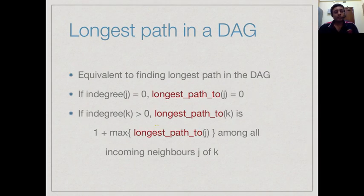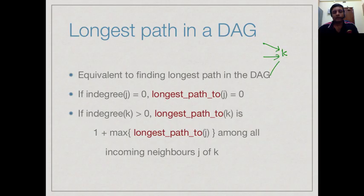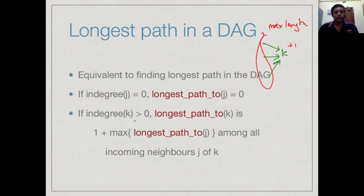We can set up this problem as follows. For any vertex with in-degree 0, the longest path to that vertex is 0 because we can do it immediately. On the other hand, if a vertex k has in-degree greater than 0, it has some incoming edges and we must wait for all of them to finish. So the longest path to k has length 1 plus the maximum of the longest paths to all its incoming neighbors, since that is the last thing to finish before we do k.